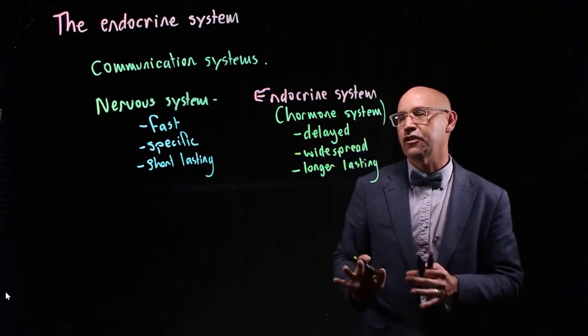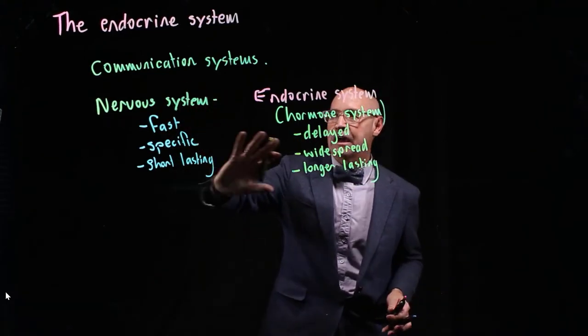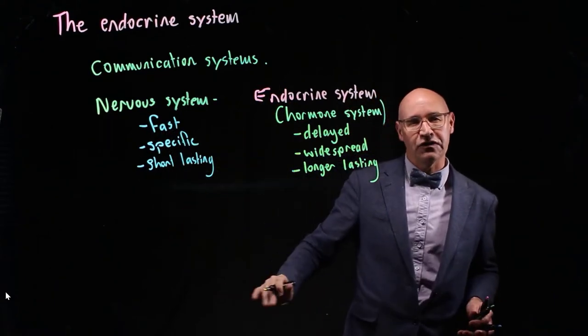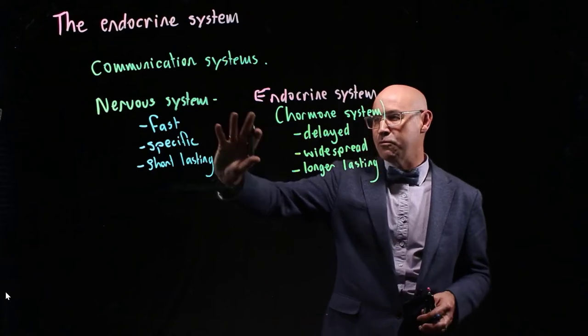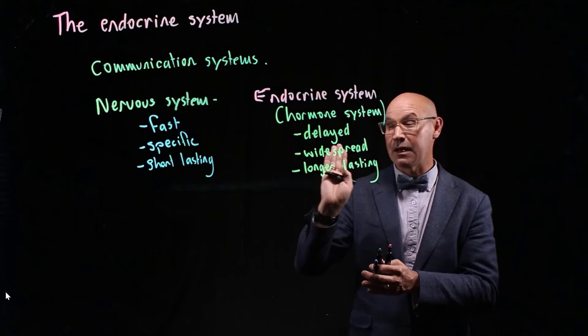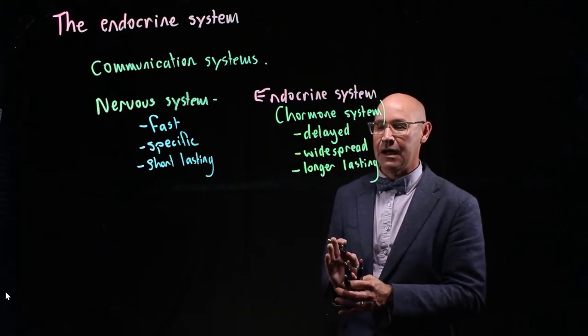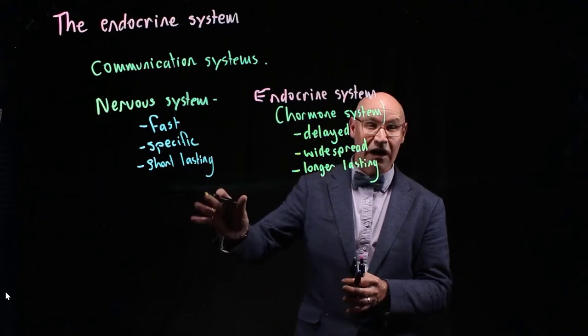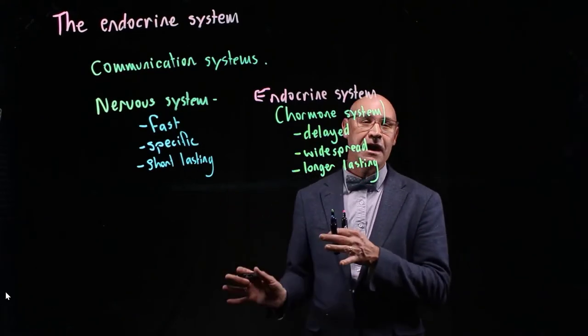One way to consider an analogy here would be thinking about communication systems that you use. Email would be an example very similar to the nervous system in that you send an email specifically to maybe one person. It gets there fast, and the effect tends to be more short-lived.